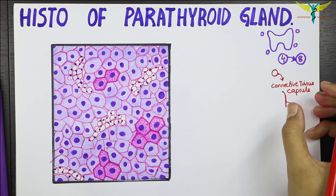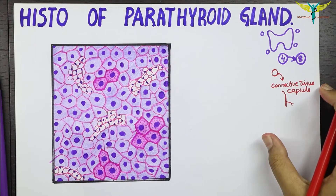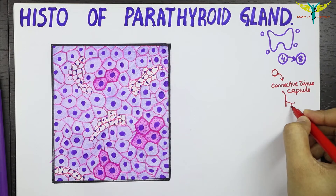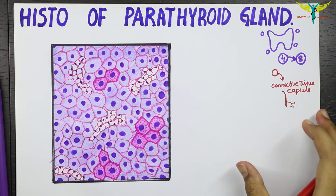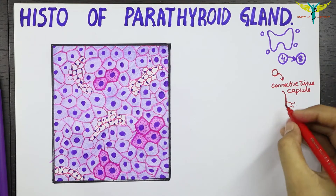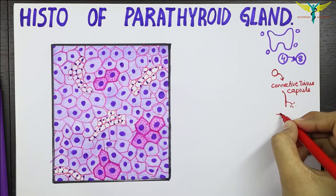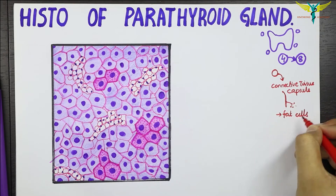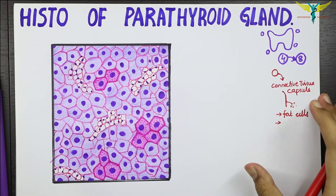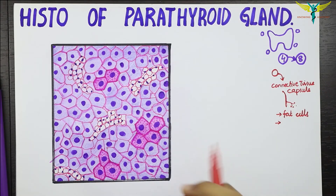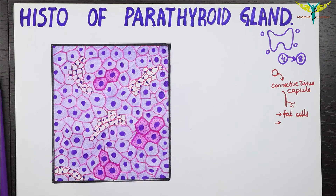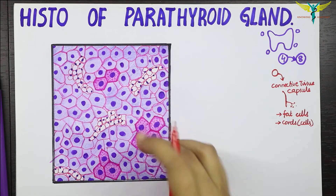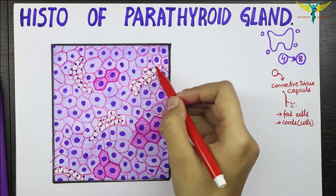Within the gland, a network of reticular fibers supports the parathyroid cells. Many fat cells and adipocytes are present in the tissue stroma. The parenchyma of the gland is made up of cells arranged in cords, with numerous sinusoids lying in close relationship to these cells.